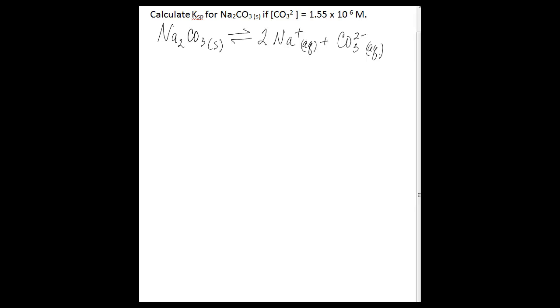So one thing you can figure out by looking at this balanced equation is that for every mole of sodium carbonate solid that dissolves, you get two moles of sodium cation and one mole of carbonate anion. So because there is a two to one ratio between sodium and carbonate...